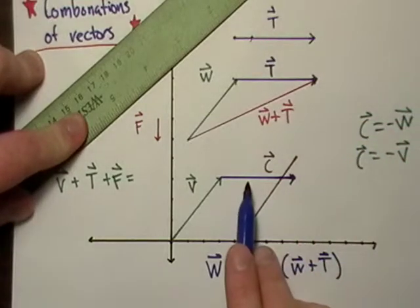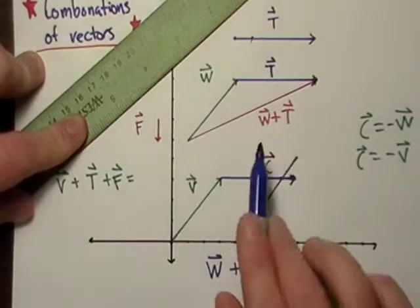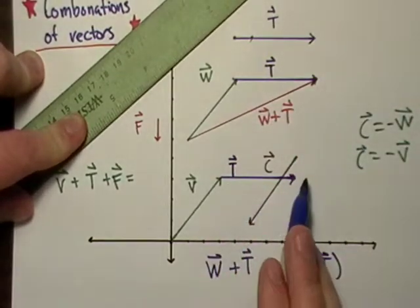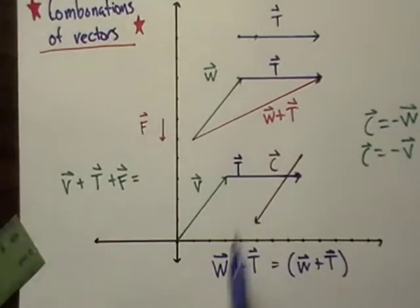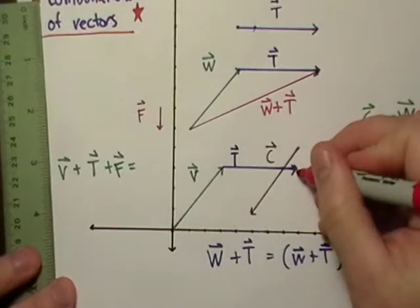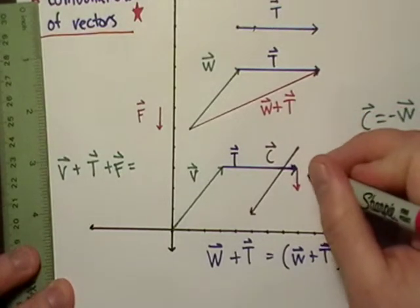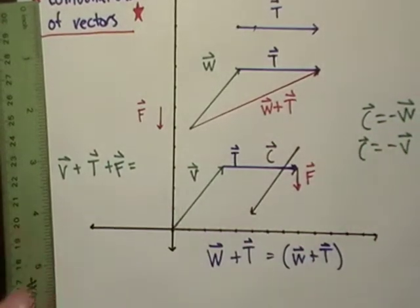This new vector is not in the same spot as T, but like before, we can call it T because it has the same magnitude and direction as T. Now we did the head to tail thing. Now we're going to do the same thing to vector F. This vector has the same magnitude and direction of F, so I'm just going to draw it just like that.